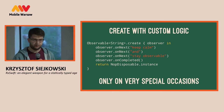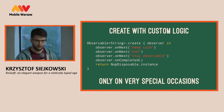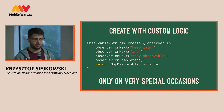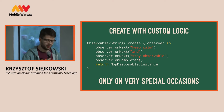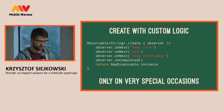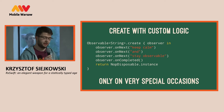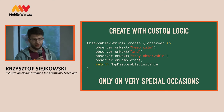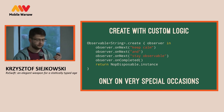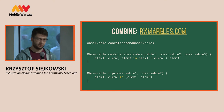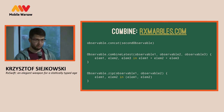If everything fails and you have no other choice and you cannot think of making use of any observable methods provided by RxSwift, you can create your own observable with custom logic. But it is almost never really needed — you almost never need to do that. Seriously.